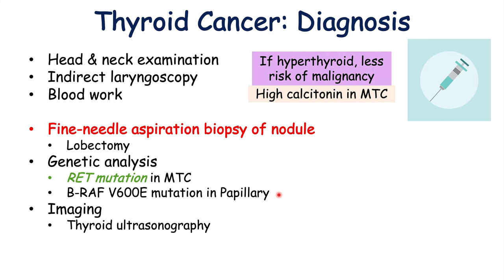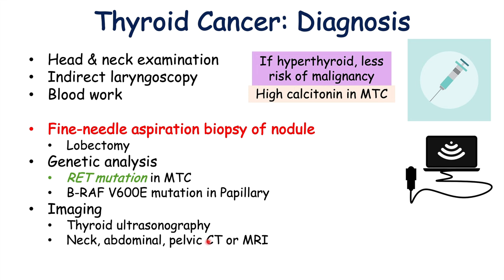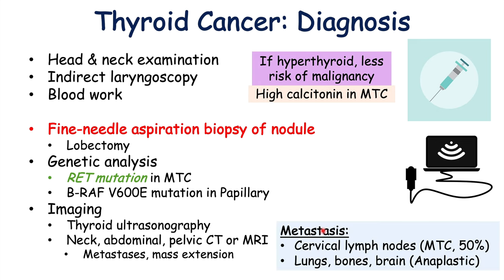Imaging is also very important. Thyroid ultrasonography is particularly important, especially when performing the fine needle aspiration biopsy. A neck, abdominal, and pelvic CT or MRI is important when looking for metastases or mass extension. Metastasis can occur in the cervical lymph nodes, noted in medullary thyroid carcinoma in about 50% of cases on diagnosis. In anaplastic carcinoma, we can see metastases in the lungs, bones, and brain.